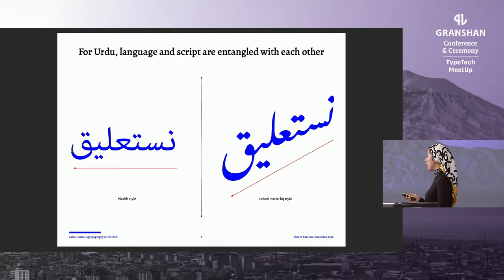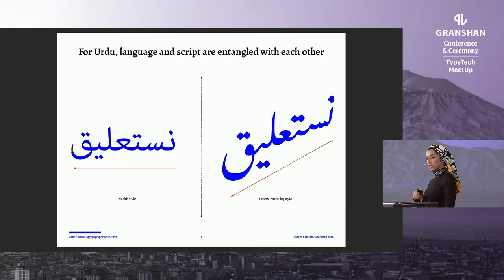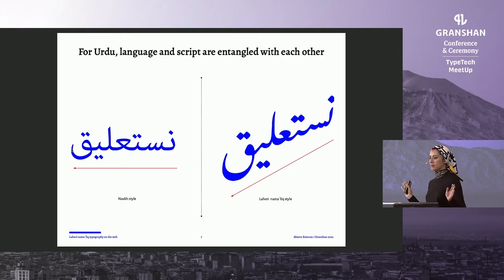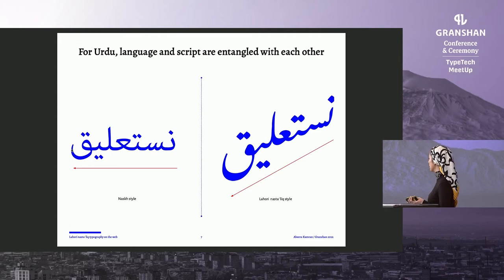To the point where, as typeface designers and type researchers, we're quite careful when we speak about the distinction between script and language, but in Urdu's case, script and language are entangled with each other — to the point where if a Urdu reader sees any text typeset in Nasq, they'll just assume it's Arabic. They won't even bother reading it, because they can only conceptually imagine Urdu in the Nastaliq style, which you can see on the right-hand side, with the Nasq on the left — very, very different visually.